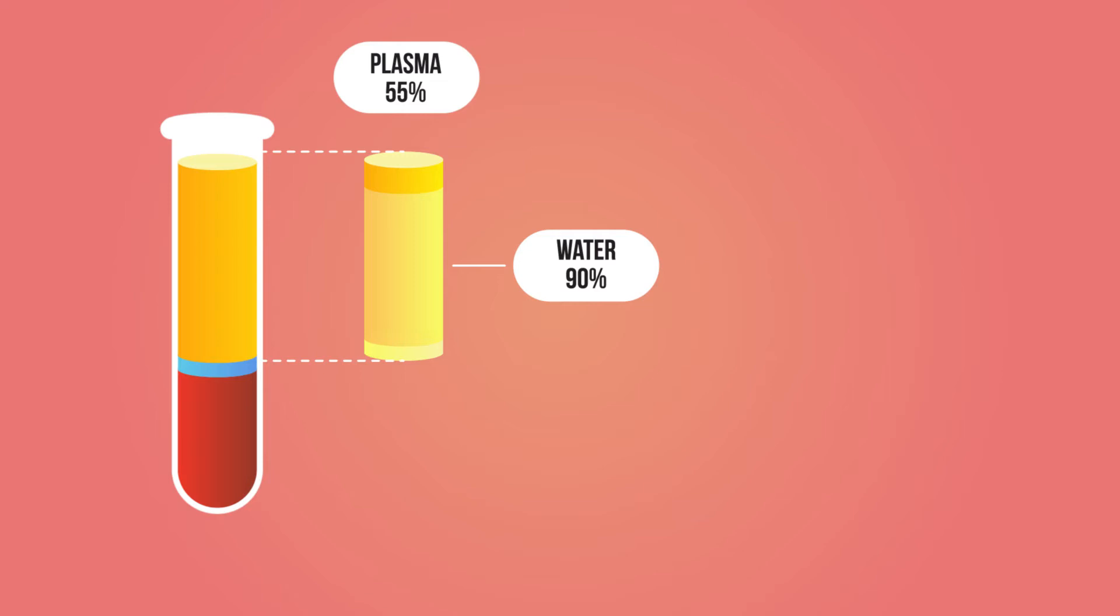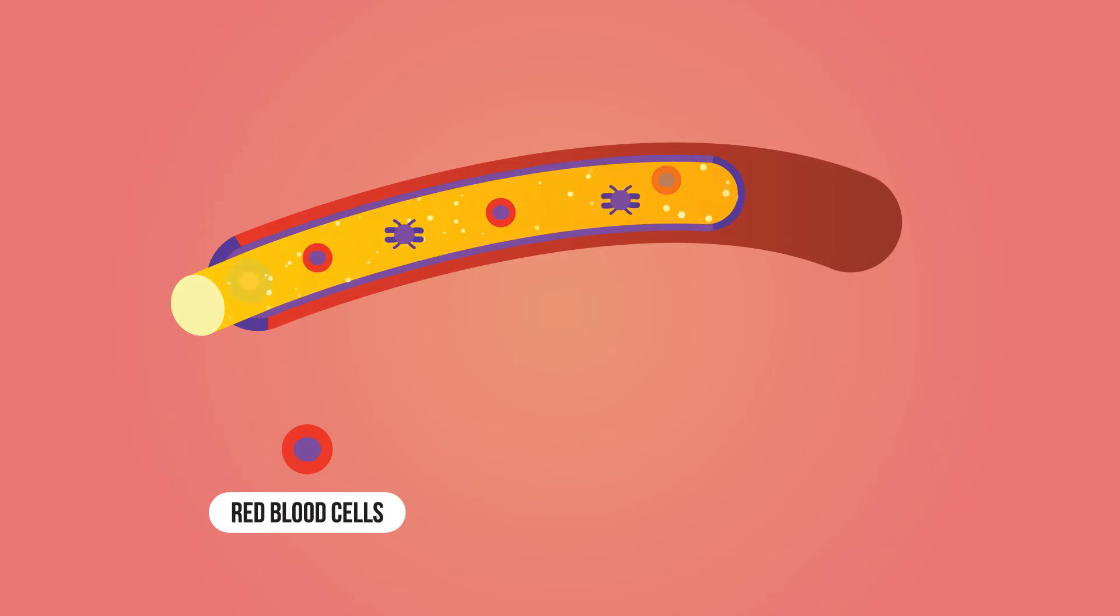So what does plasma transport? It carries red blood cells which themselves carry oxygen, and white blood cells, platelets, and nutrients.